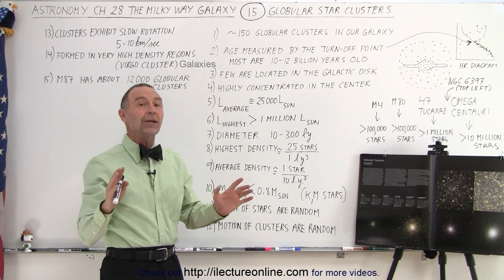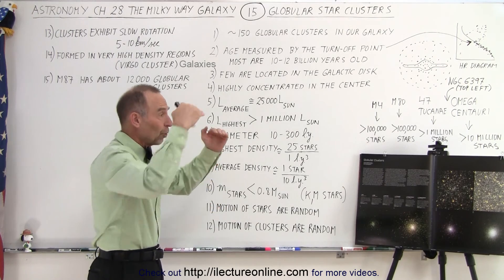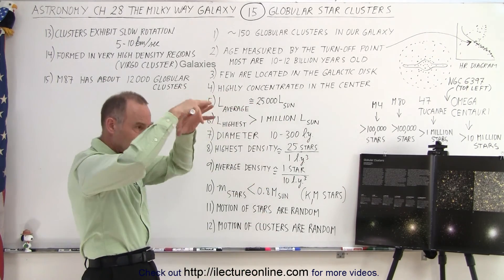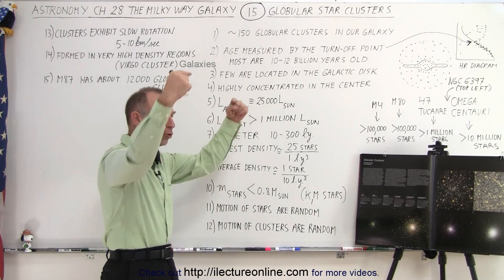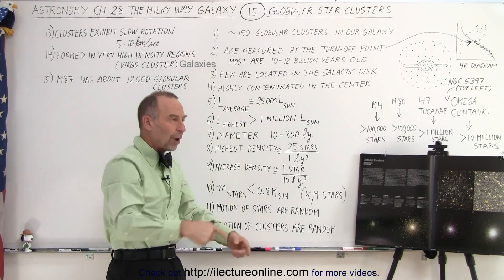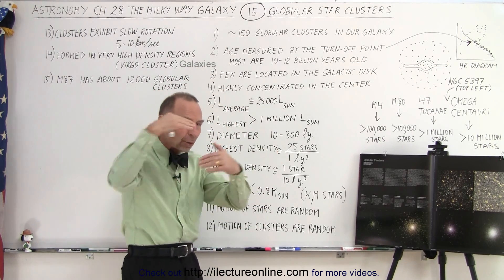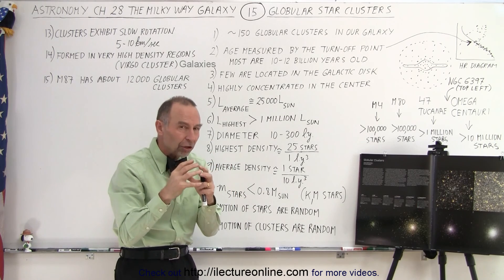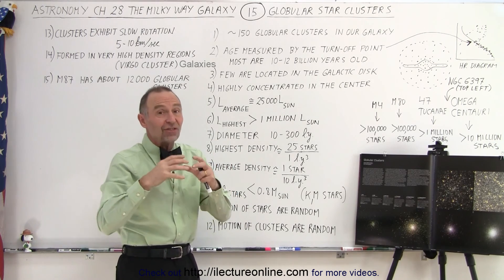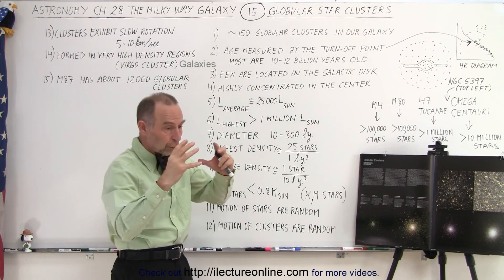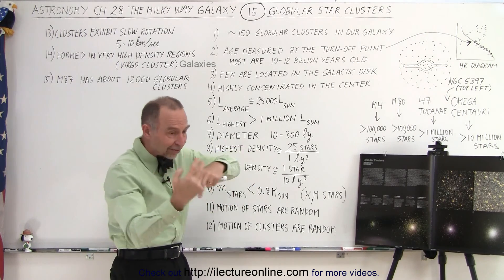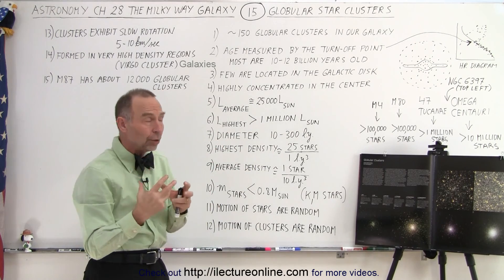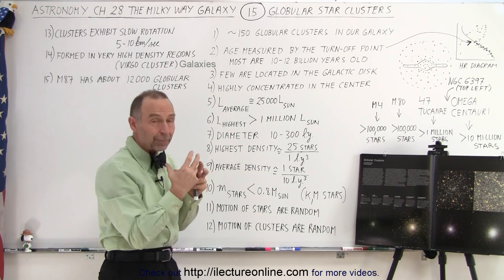Each globular cluster is completely independent, following its own path in different directions. So even though they stay in that spherical confine and do revolve around the center of the galaxy, they tend to go in all kinds of different directions. On top of that, the stars within each cluster do the same thing — the whole cluster doesn't rotate uniformly; instead, all the stars in the cluster tend to go their own separate direction.